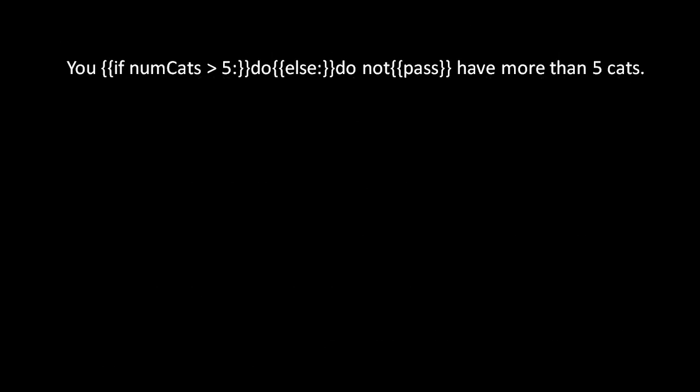With these four rules in mind, say we have a view file with this content. When this gets translated into Python, all of the chunks of text outside the pairs of double curly braces become a single line of Python code that invokes response.write with that text as the argument. And the text inside each pair of curly braces gets taken verbatim as one or more lines of Python code.